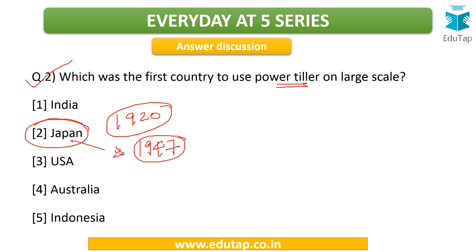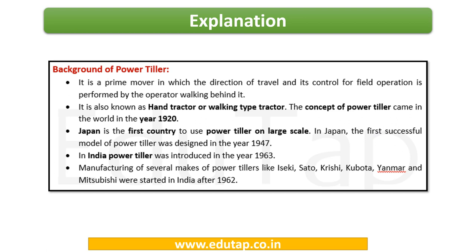In India, the power tiller came into existence in the year 1962-63. If there is 63 in the option, you can choose that; otherwise, if a range is given, you can choose 1962 to 63. So this is a short background of the power tiller. The operator walks behind it, and it is also known as a hand tractor — that is one important piece of information. In the world, this concept came in 1920, with Japan being the first country to use it on a large scale. In India, the power tiller was introduced in the year 1963.